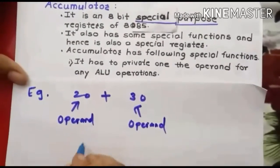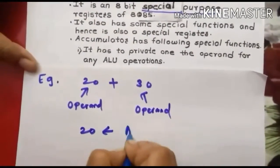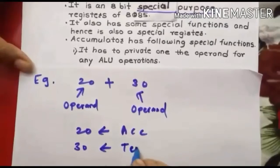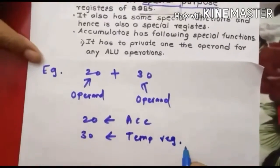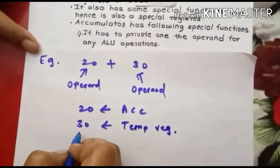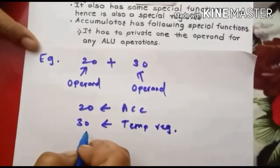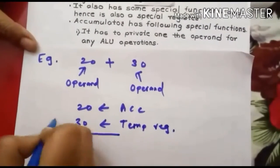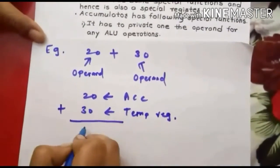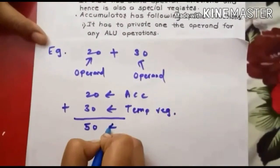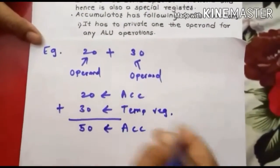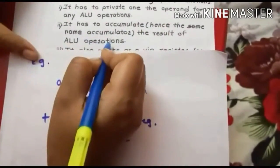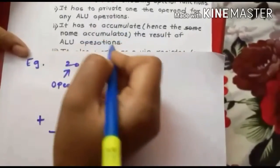We must compulsory store one operand into the accumulator. So we will store 20 into the accumulator and 30 into any temporary register — that is, register B, C, D, E, H, or L. After performing the addition we will get result 50, and that result 50 is by default stored into the accumulator. So the second function is that it accumulates the result of ALU operations.